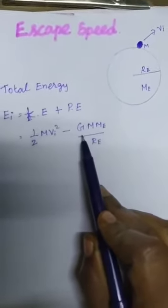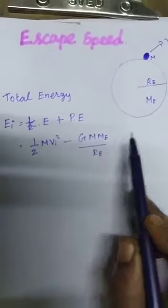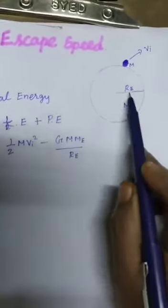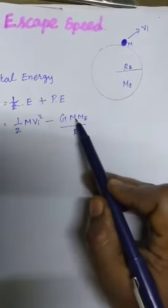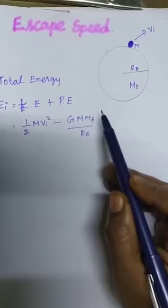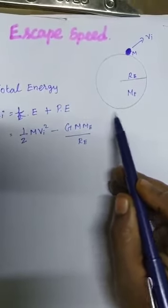Here capital G is the gravitational constant, M is the mass of the object, and M_E is the mass of the Earth. R_E is the radius of the Earth. When the object reaches a height far away from the Earth surface, it approaches an infinite distance. At that point the gravitational potential energy becomes zero, and the kinetic energy also becomes zero.